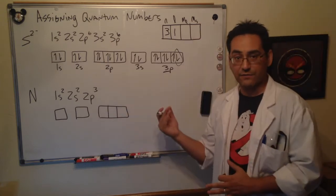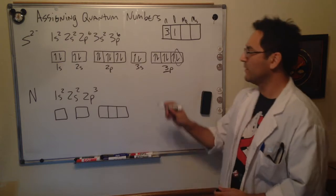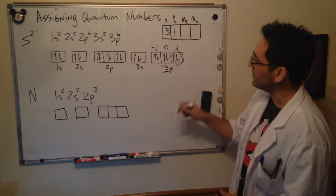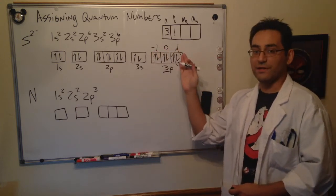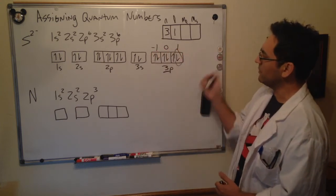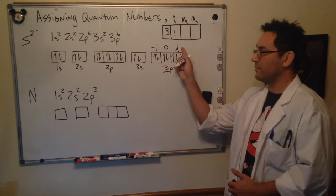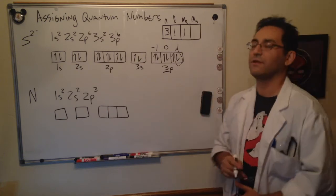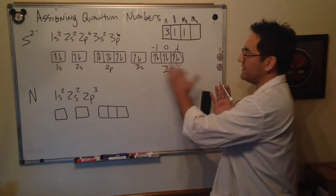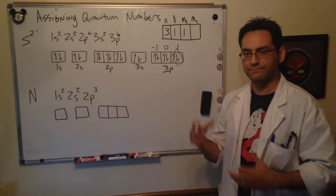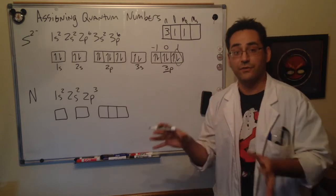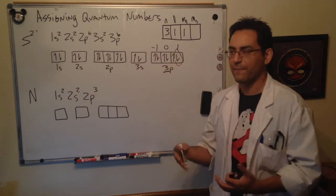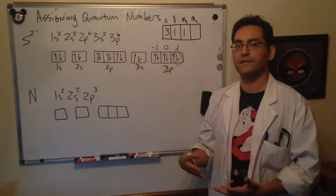All right, well what is ml? This is why I like to show out the orbital diagram, because remember the values of ml can be everything from minus one to plus one. Since this electron went into the plus one orbital, we can assign it a one.